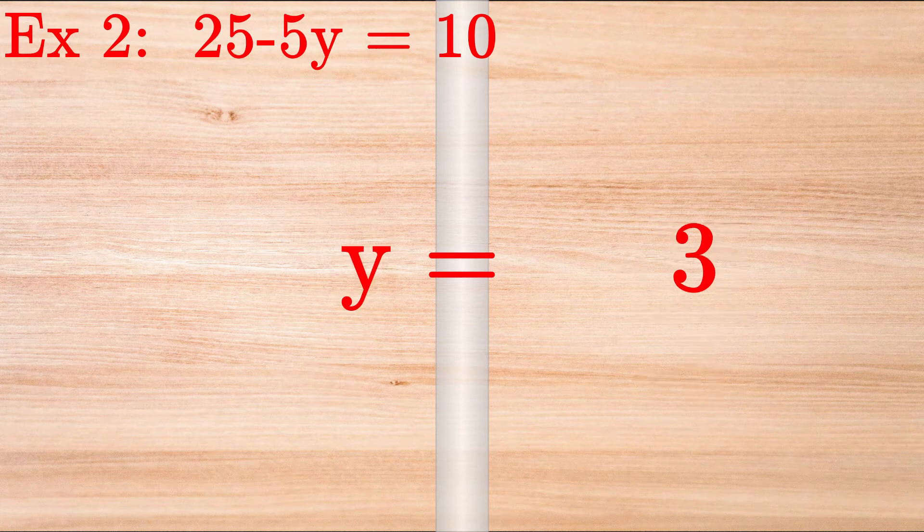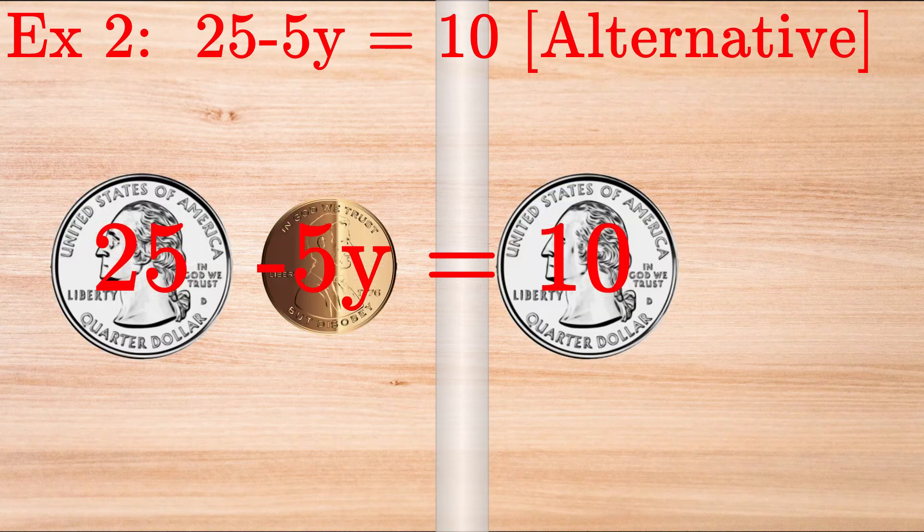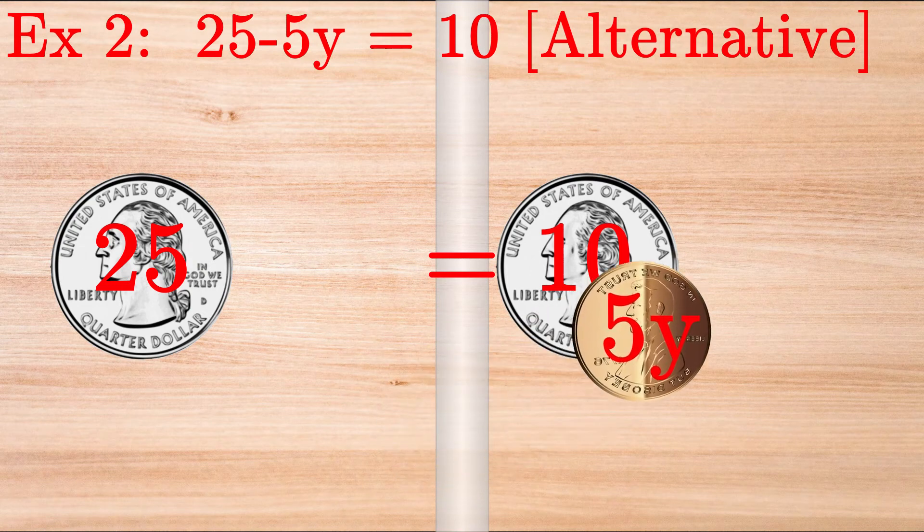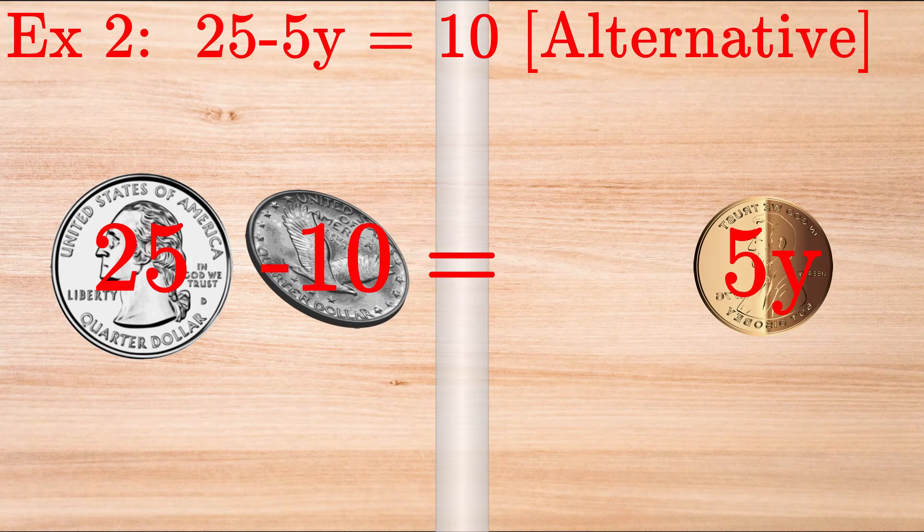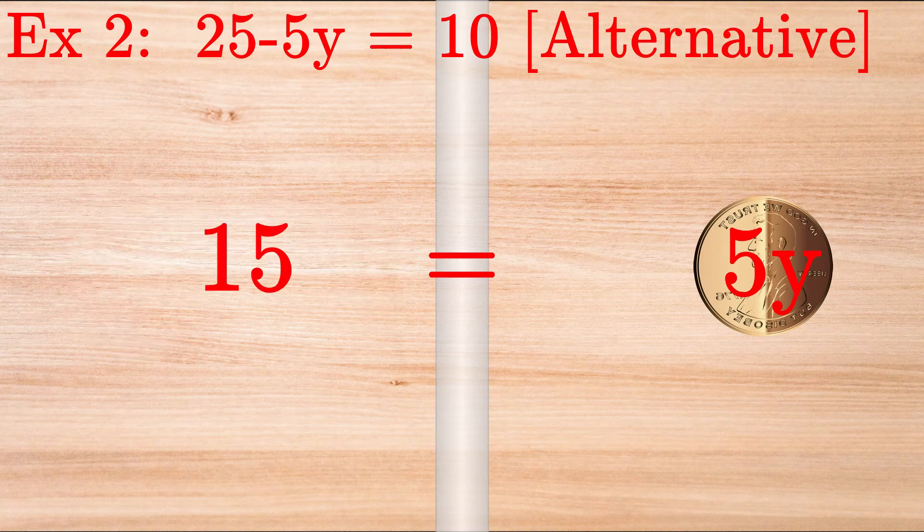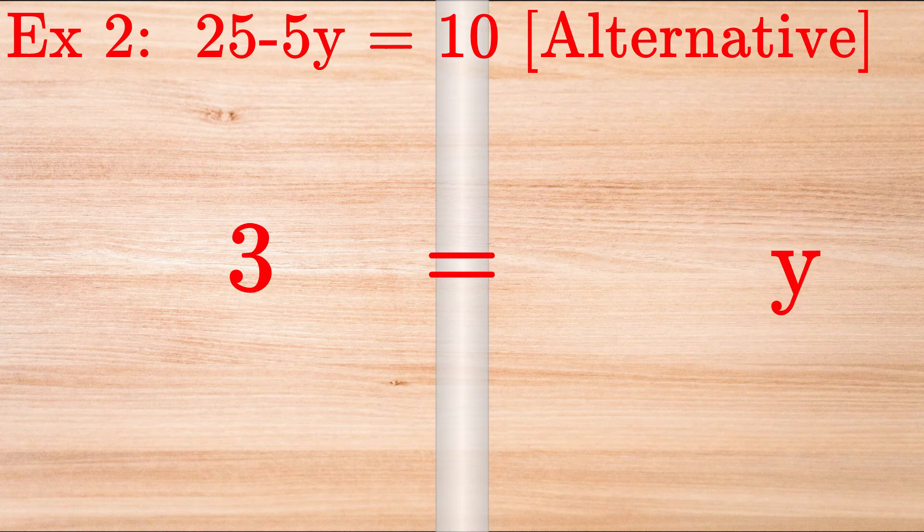Let's try this again another way. If we prefer the minus 5Y coin to be positive, we can move it to the right-hand side. But then we have to move the 10 coin to the left-hand side. In doing this, we see that 15 equals 5Y. Dividing the entire equation by 5, we again find that 3 equals Y, or Y equals 3.